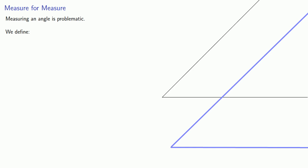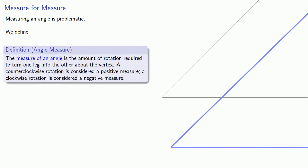So we define it this way. The measure of an angle is the amount of rotation required to turn one leg into the other about the vertex. A counterclockwise rotation is considered a positive measure, and a clockwise rotation is considered a negative measure.